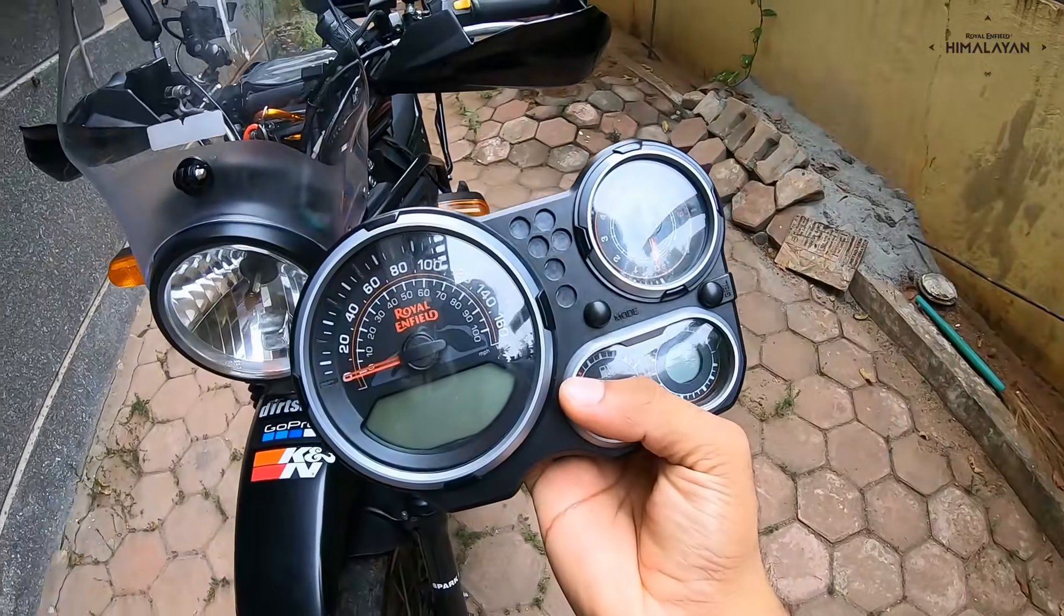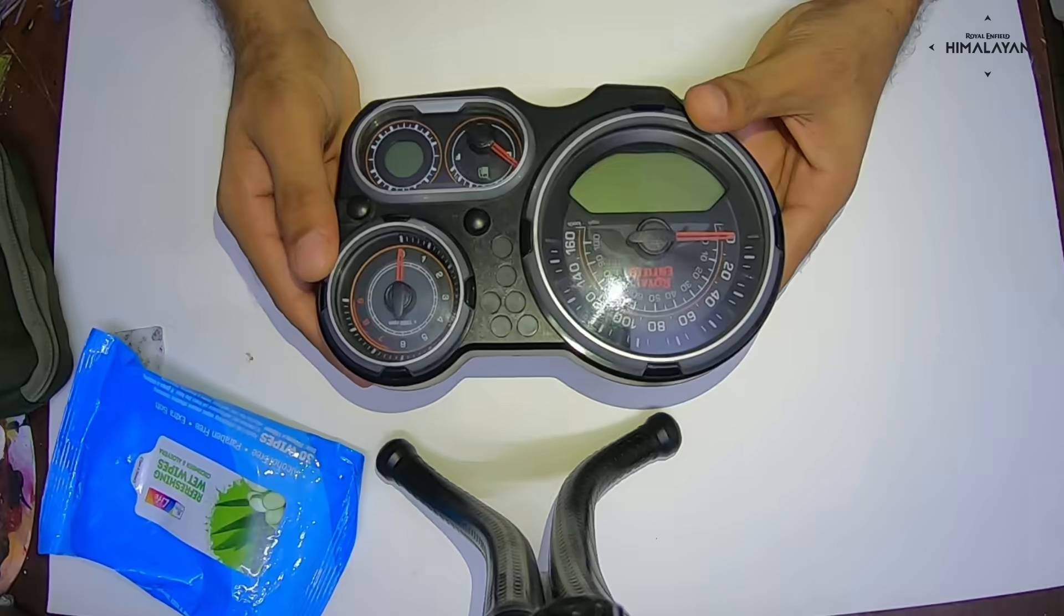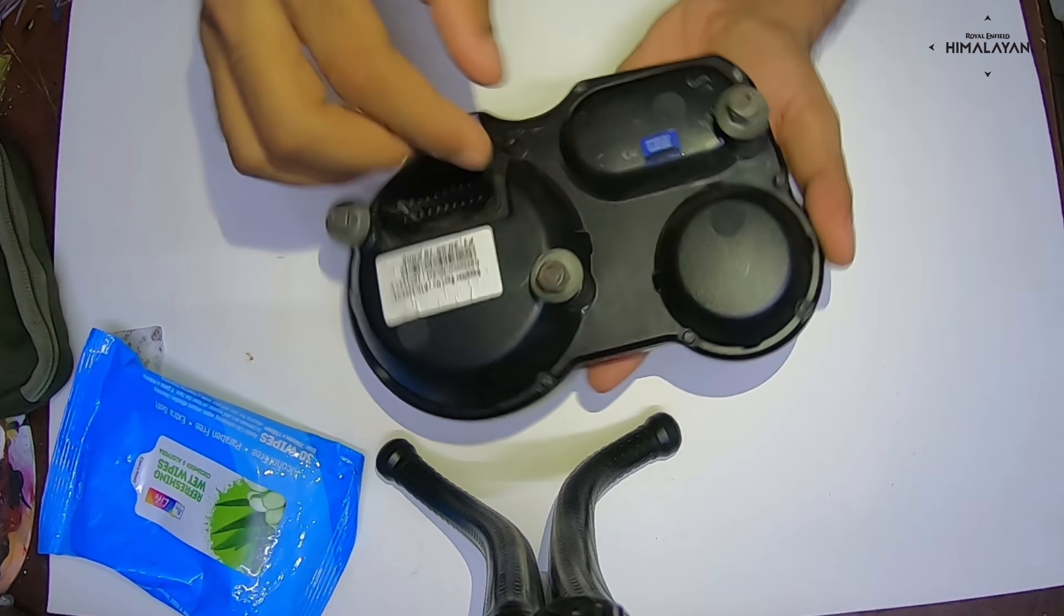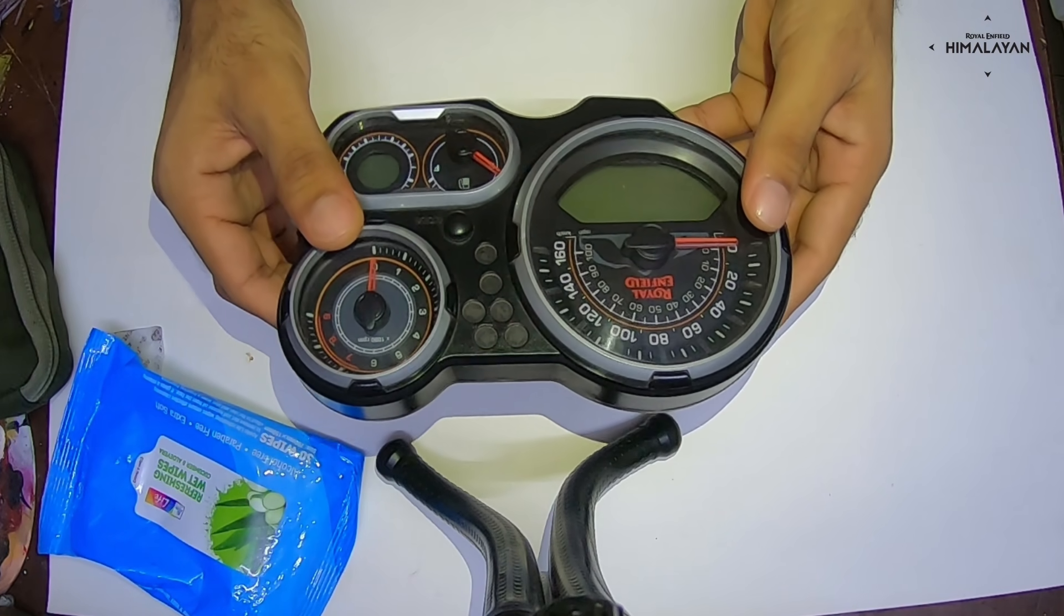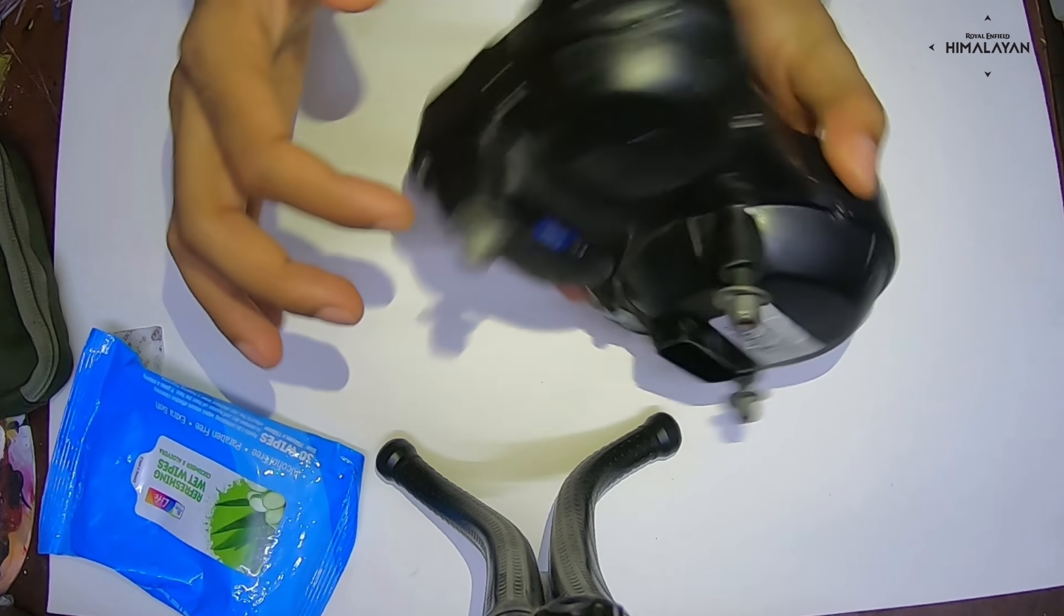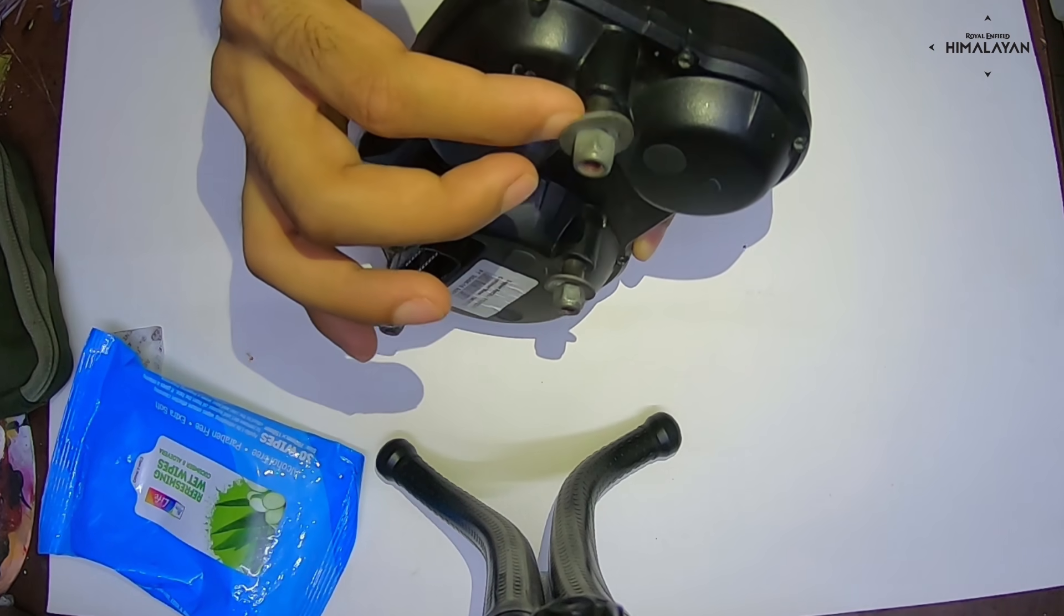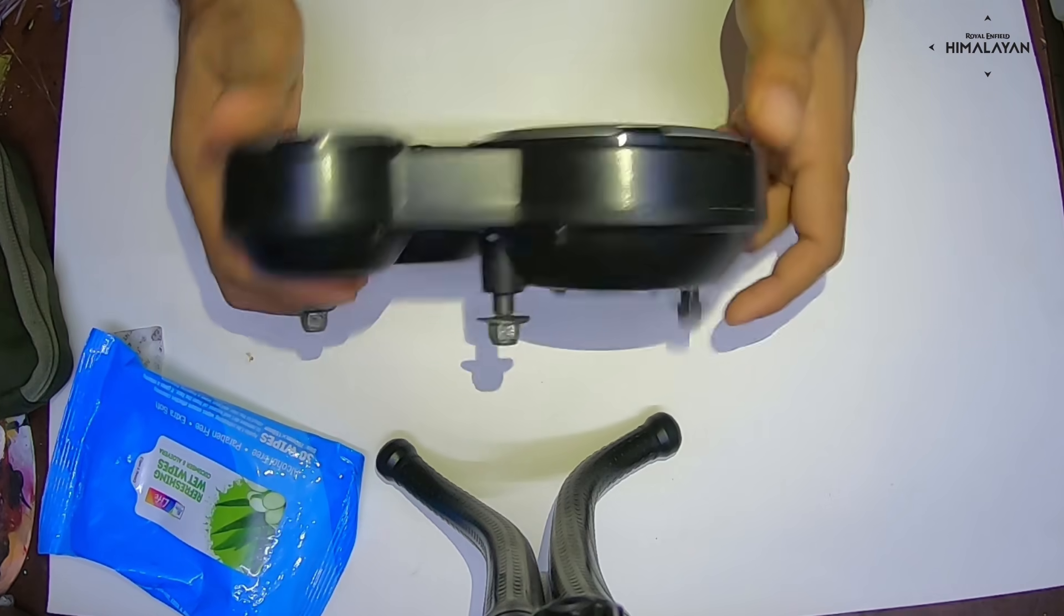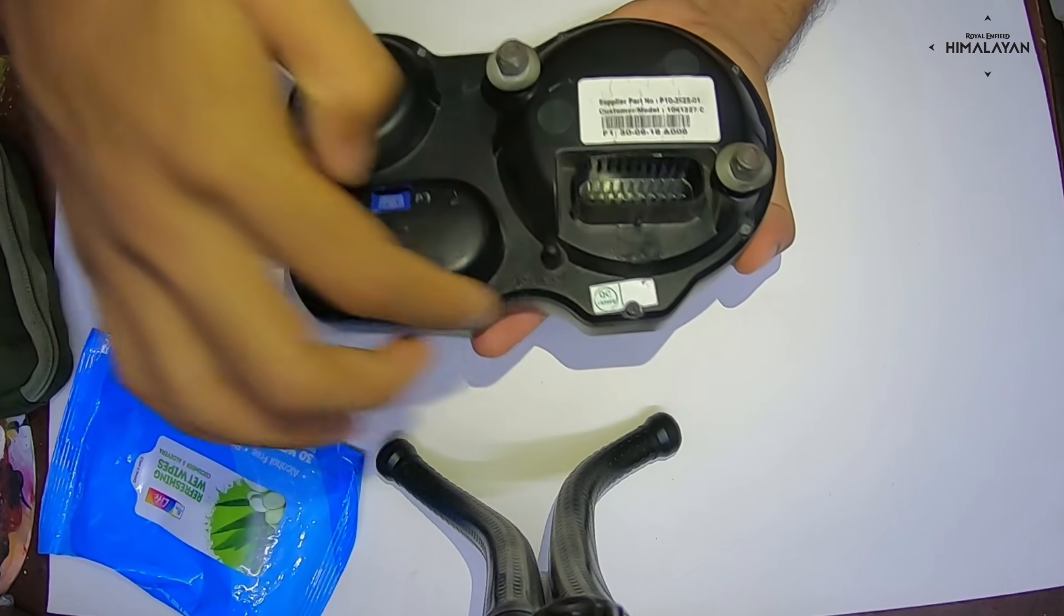Hi friends, this is the cluster removed from the motorcycle. As you can see, you have three bolts here. This particular speedometer console gets mounted onto the subframe of the motorcycle with the help of these three bolts. These are support arms that you can see, onto which you have steel spacers or washers and nuts.